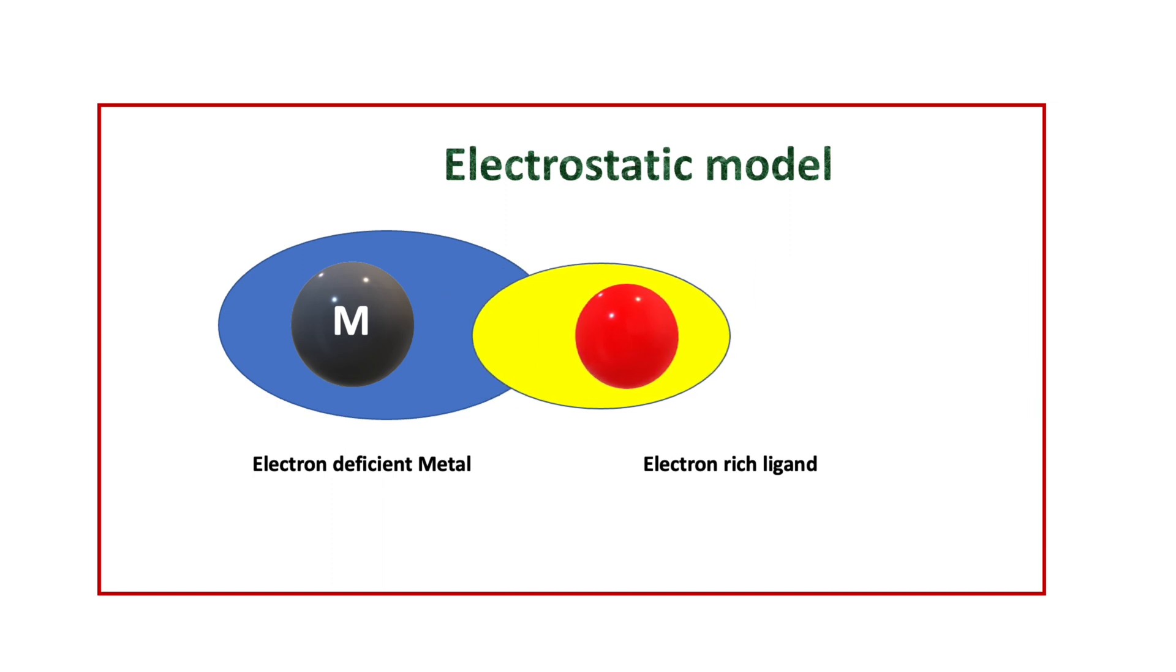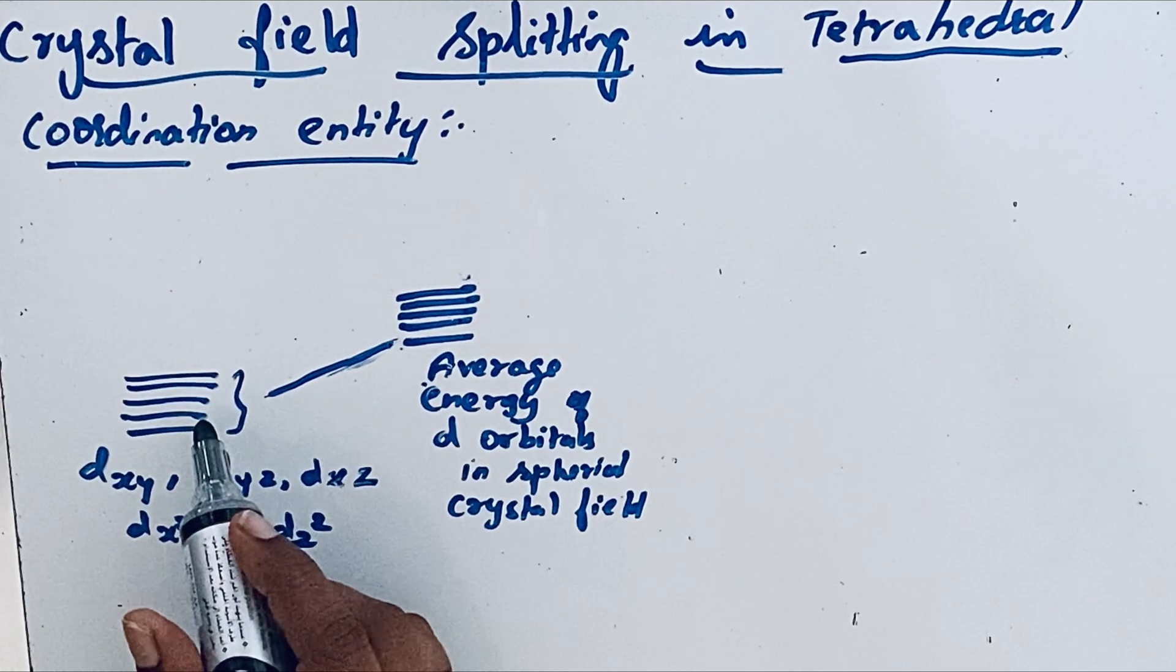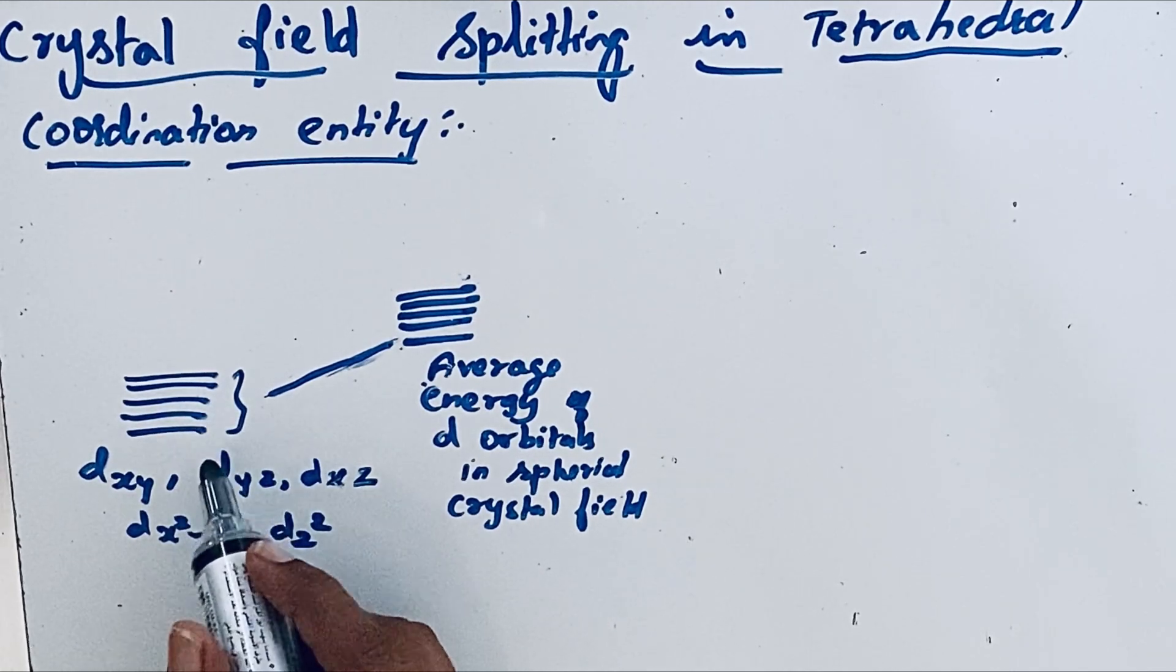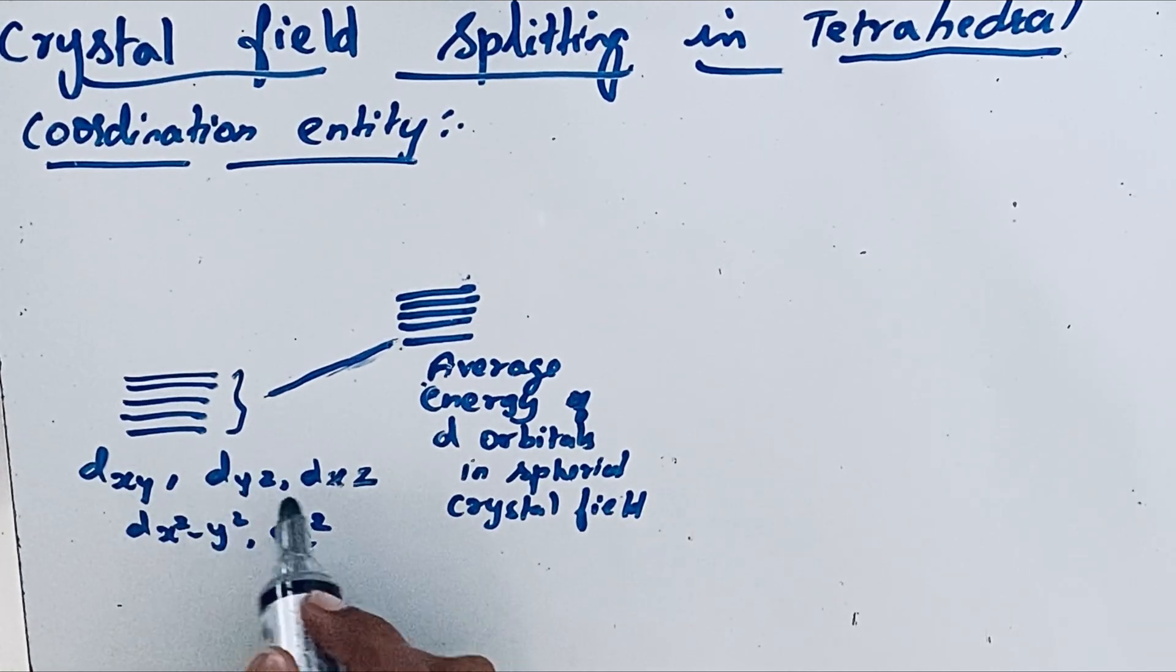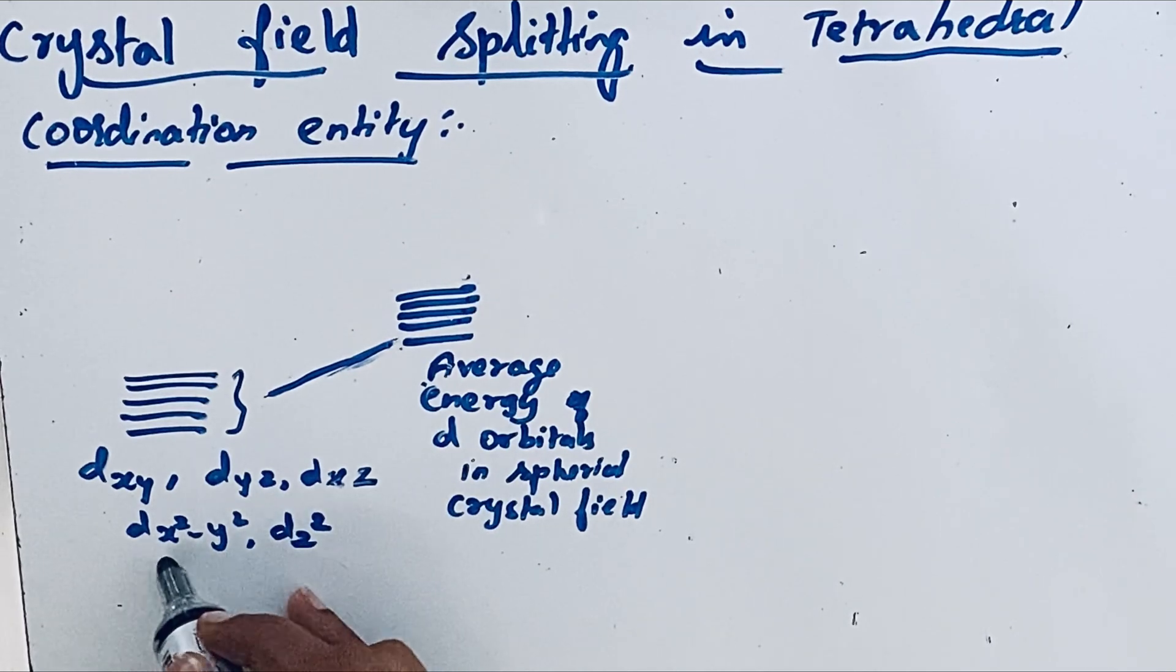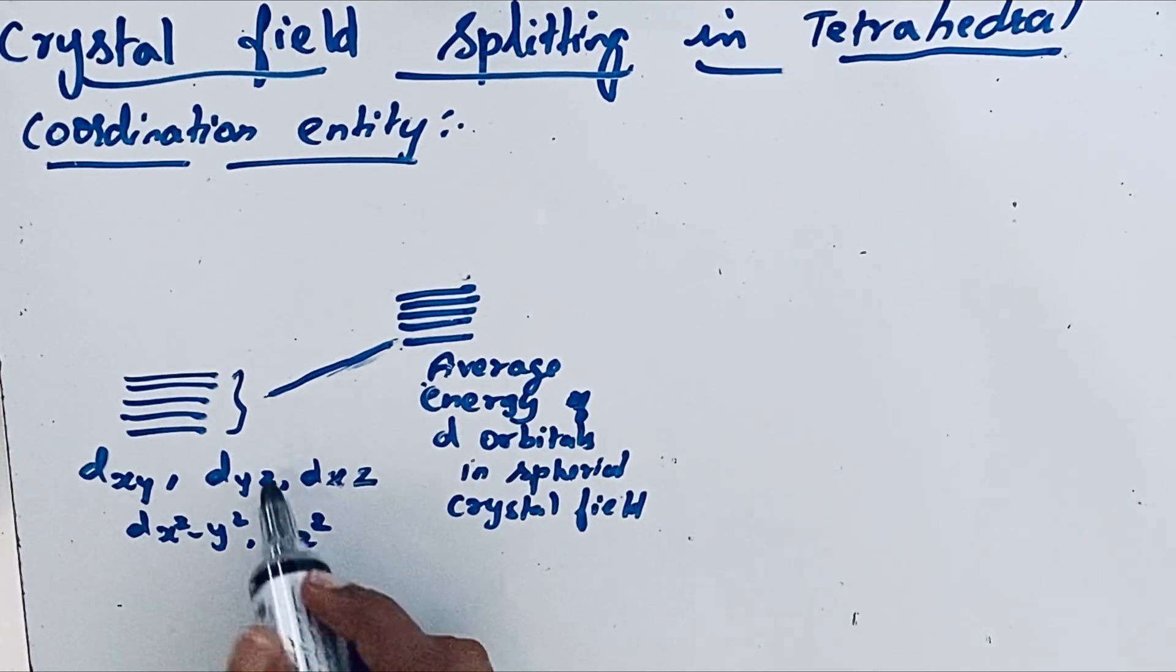Here, the ligands are treated as point charges in case of anions or point dipoles in case of neutral molecules. There are five d orbitals: in isolated free metal ion or atom dxy, dyz, dxz, dx squared minus y squared, and dz squared. All of them are degenerate, meaning they all have the same energy.